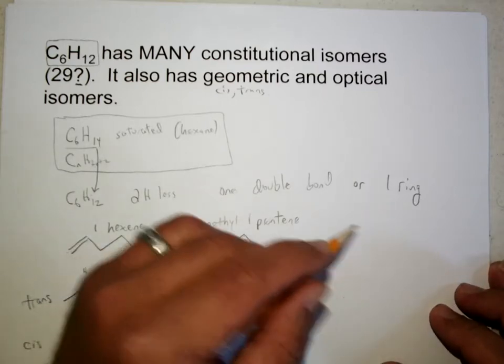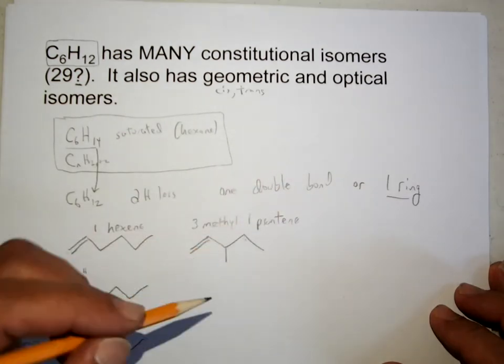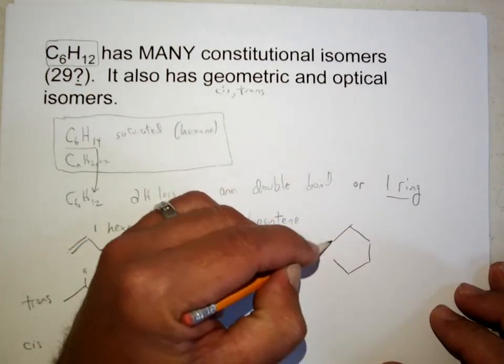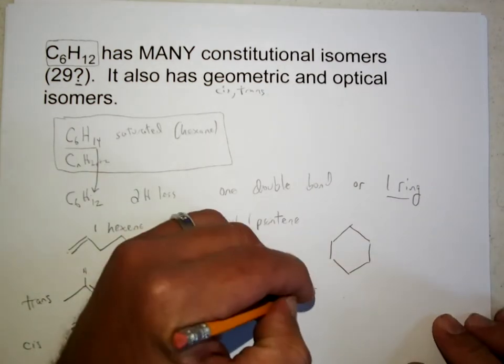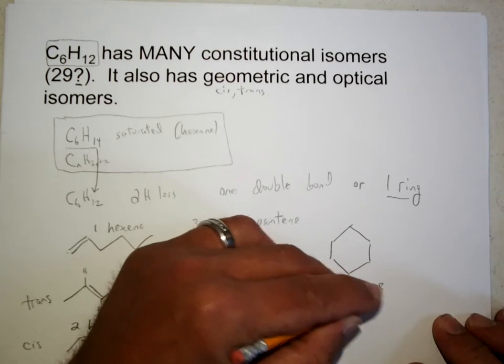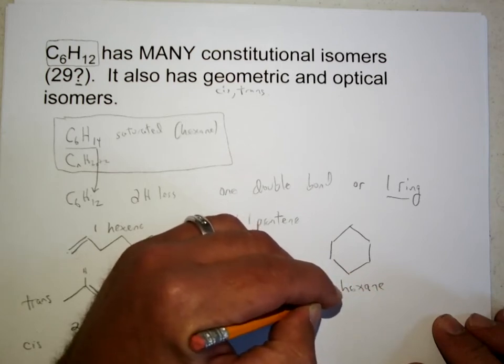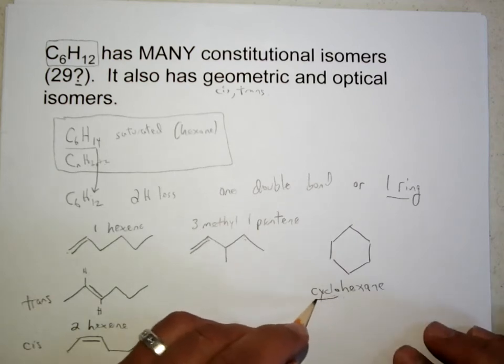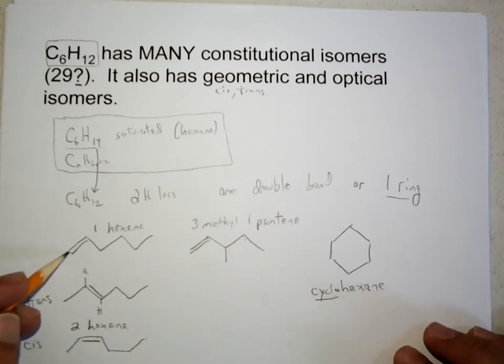The other types of isomers you would get are with the ring. So if you have a degree of unsaturation, you can have cyclohexane, where now there's no pi bond.